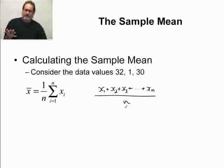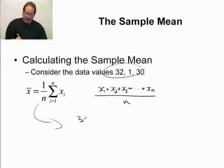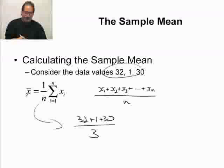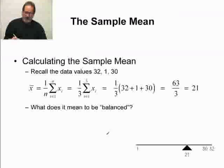In this case, N is 3, so we take X1 plus X2 plus X3 and divide by 3. So, specifically for this example, we would have 32 plus 1 plus 30 divided by 3. That's exactly what this formula is telling you to do. And, when we do that, we get 63 over 3, which is 21.